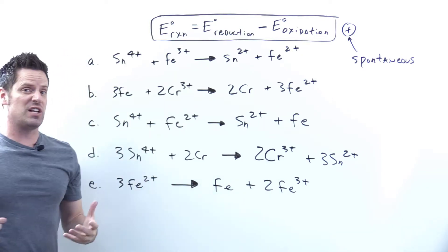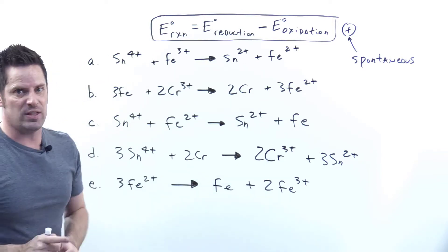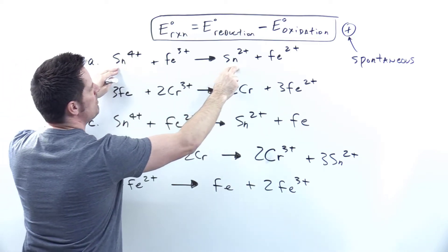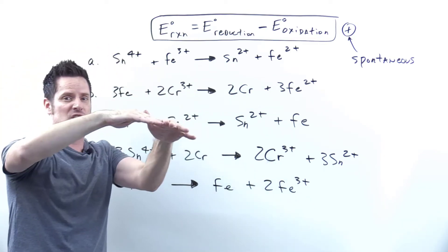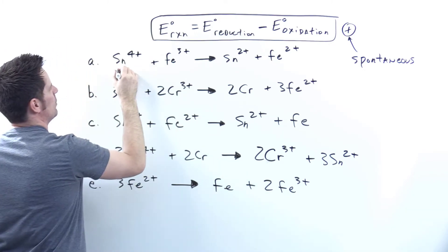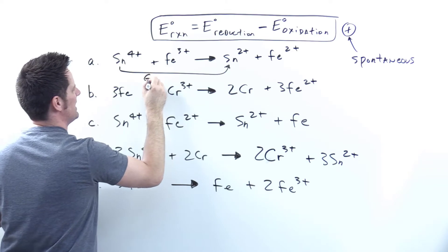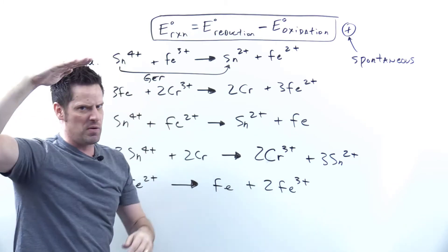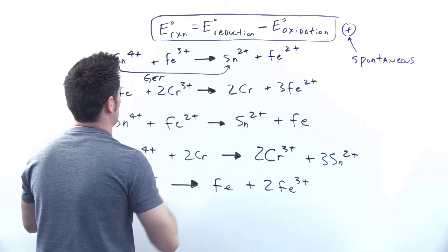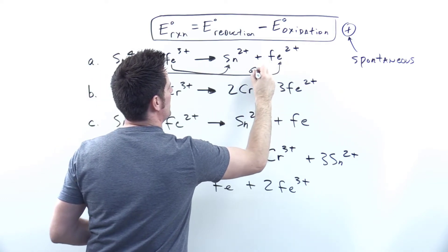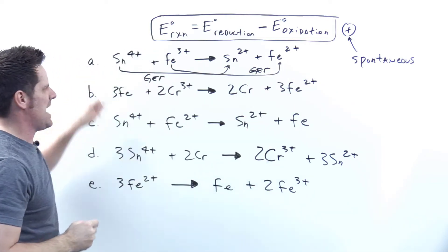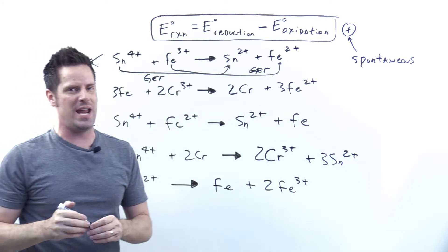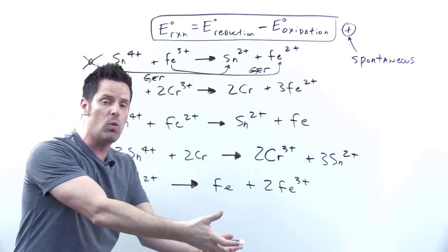To determine if something is oxidized or reduced, we look at oxidation numbers. In reaction A, tin goes from plus 4 down to plus 2 — that's a reduction. Iron goes from plus 3 down to plus 2 — that's also a reduction. Two reductions means it's impossible, so we cross off reaction A.